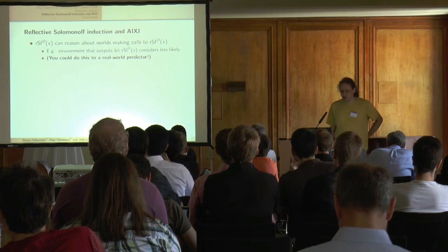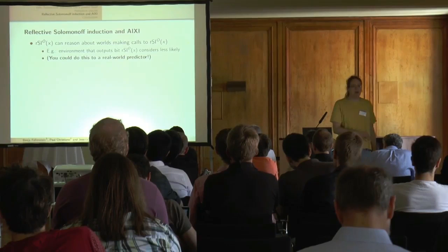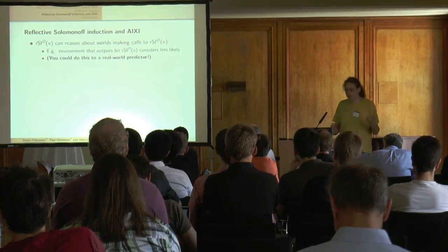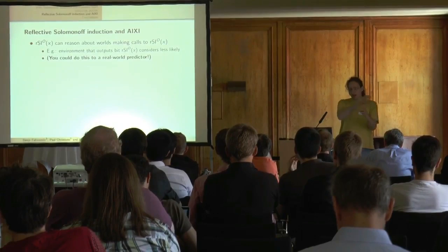So reflective Solomonoff induction can reason about worlds which themselves call reflective Solomonoff induction, because reflective Solomonoff induction is itself a machine of the same form — a probabilistic Oracle machine that takes as input what it has seen so far, outputs the next bit, and always halts. So if you take it as M and construct the corresponding N, it doesn't change the behavior.